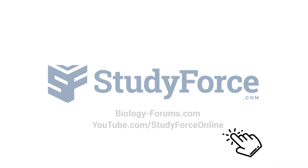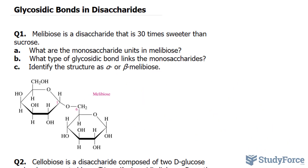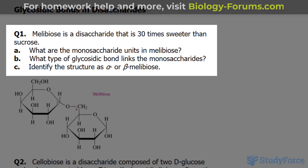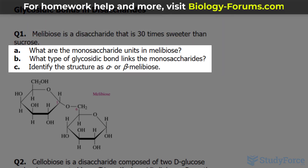In this lesson, we'll learn about glycosidic bonds in disaccharides. Question one reads: Molybios is a disaccharide that is 30 times sweeter than sucrose, table sugar. For question A, what are the monosaccharide units in Molybios?